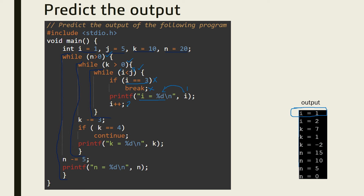It goes back and checks 2 less than 5, which is true, so it comes inside the loop again. It checks whether i equals 3 — i is 2, so again the break statement is not executed. It comes down and prints the value of i, which is 2, so it prints i equal to 2.